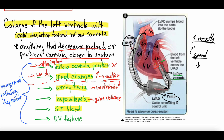GI bleed is another cause — it creates a relative hypovolemia, not from fluid loss but from loss of blood. Patients with LVADs have a high risk of GI bleed: they are on anticoagulation, they often have malfunction of their von Willebrand factor, they sometimes have platelet dysfunction or low platelets, and they're more likely to get AV malformations in their gut because the LVAD doesn't provide pulsatile flow the same way the heart does. Over 25% of LVAD patients get GI bleeds. So if a patient comes in with dark stools and suction events, it's probably a GI bleed.